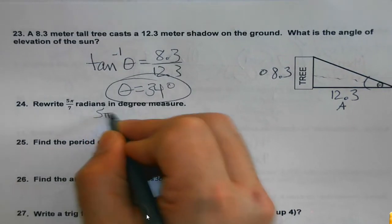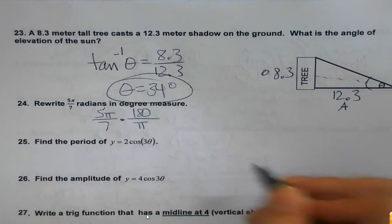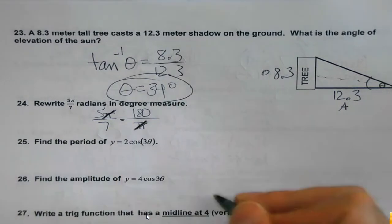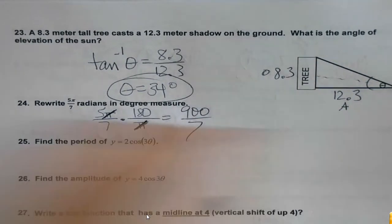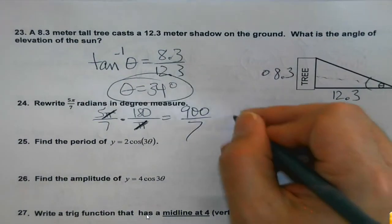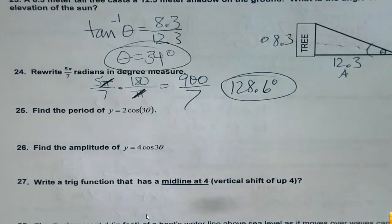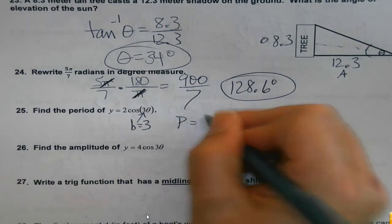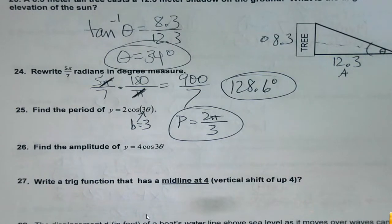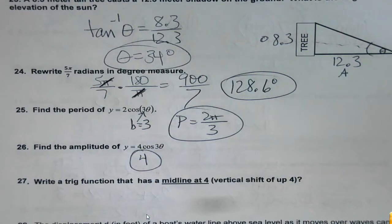Radians to degrees means we want the radians to go away, so pi belongs in the bottom — that way the pis cancel. It might not come out to a nice number and that's okay; if you got 129 you'd go with it on the test. For period: it's 2π over b — not just b itself, so don't get tricked if 3 is one of the answer choices. For amplitude: it's the value in front of sine or cosine, and it's always positive.